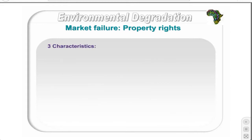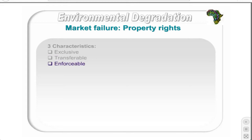Property rights need three characteristics for efficient resource use. First, they must be exclusive — only one individual or group has allocated rights to use the resource at a specific time, incurring all costs and reaping all benefits. Second, they must be transferable — the owner may sell, lease, or bequest rights to another, assuring future benefits. Third, they must be enforceable by law, so rights cannot be encroached or seized. If any characteristic is missing, the incentive for efficient and sustainable resource management is undermined.